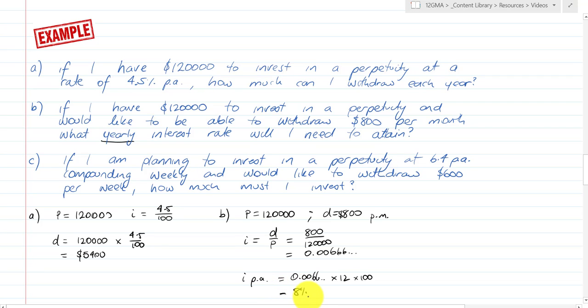Part C: If I'm planning to invest in a perpetuity at 6.4% per annum compounding weekly and would like to withdraw $600 per week, how much must I invest? 6.4% is our I, D is $800.